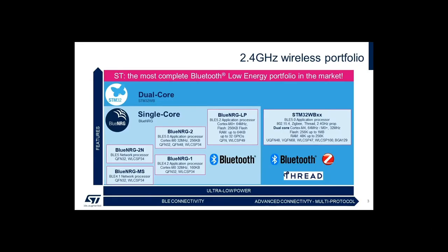In regards to our Bluetooth Low Energy product portfolio, we have two main product offerings depending on our customer needs in regards to features and processing capabilities. Our STM32 product family is based on a dual-core SoC with a Cortex-M4 running the application and a Cortex-M0 Plus running the BLE stack, with up to one meg of flash and 256k of RAM. On the other hand, we have our BlueNRG product family, where we have both a network co-processor and an SoC product offering.